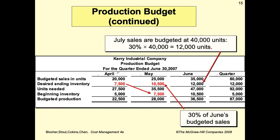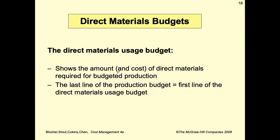The direct materials usage budget shows the amount and cost of direct materials required for budgeted production. The last line of the production budget equals the first line of the direct materials usage budget.